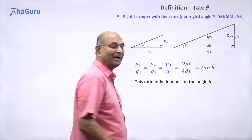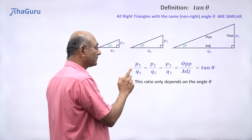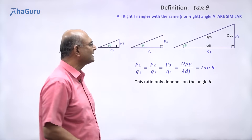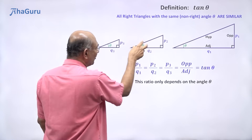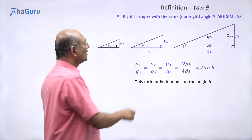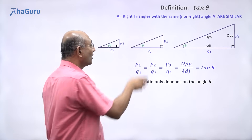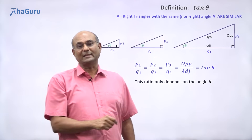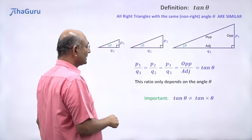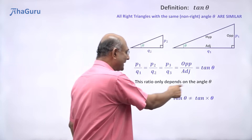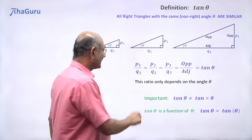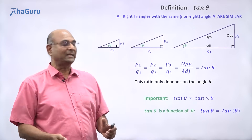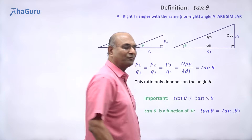Since it only depends on the angle theta, we can write this ratio as a function of theta. We call this tan of theta — or tan theta. Tan theta does not depend on whether this was Q1 or P1; it doesn't care about the size. It depends on the angle. Because if you had a smaller triangle with the same angle, you will get the same ratio. So tan theta will be the same whichever triangle you pick. I want you to note that tan theta is not tan multiplied by theta — that has no meaning. Tan theta is a single term, a function of theta.